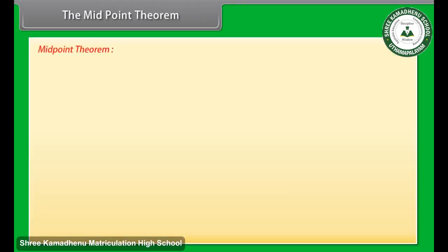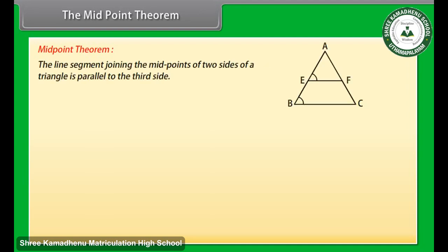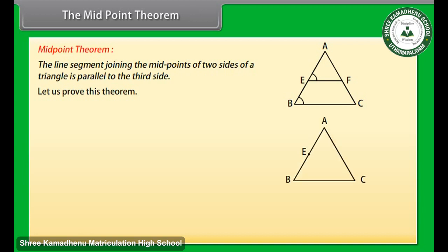The midpoint theorem. Now we will study the midpoint theorem, which says that the line segment joining the midpoints of two sides of a triangle is parallel to the third side. Let us prove this theorem. Draw a triangle ABC. Mark point E as the midpoint of AB and F as the midpoint of AC. Draw a line CD parallel to AB which intersects the extended EF at D.